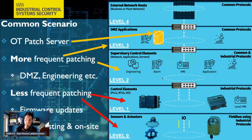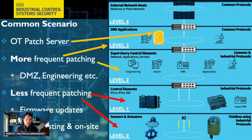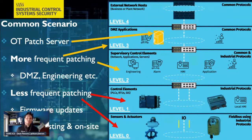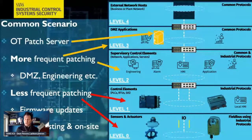As we get lower in the Purdue model, we see less frequent patching — specifically with controllers, RTUs, and safety instrumented systems. Lower levels require more testing, and you may not have a centralized patch server managing those devices. We see more on-site visits, with engineering staff going to update PLCs with firmware in hand, uploading directly to devices on-site.